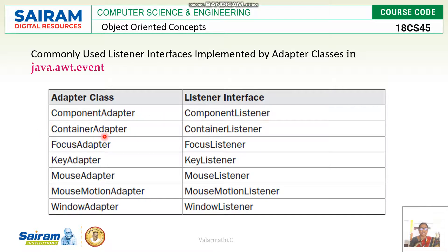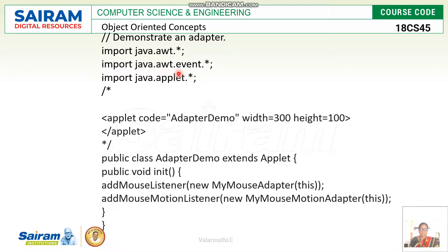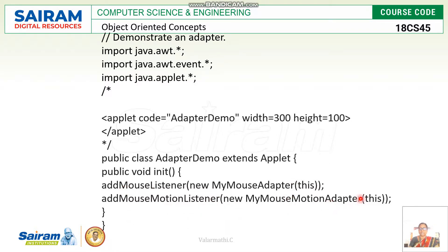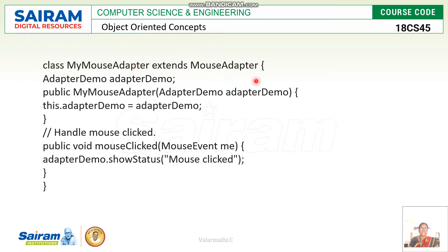By overriding the methods mouseDragged and mouseMoved, you can perform mouse events in a quicker and easier way. The adapter classes are defined in the package java.awt.event. The available adapter classes are: ComponentAdapter, ContainerAdapter, FocusAdapter, KeyAdapter, MouseAdapter, MouseMotionAdapter, and WindowAdapter. Each adapter class is mapped with its corresponding listener — for example, ComponentAdapter maps to ComponentListener, ContainerAdapter to ContainerListener, and FocusAdapter to FocusListener.